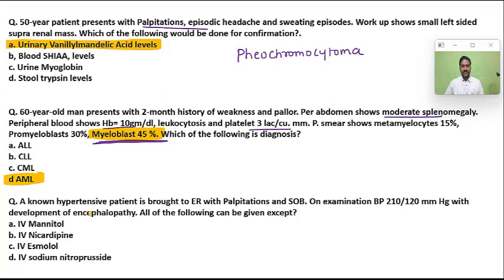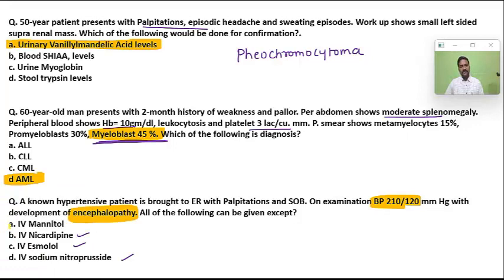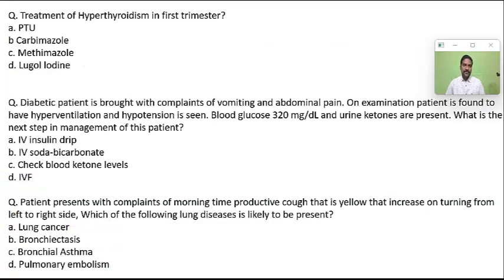A non-hypertensive patient is brought to the emergency with palpitations and shortness of breath. BP is very high and he has developed encephalopathy — this is a hypertensive emergency. In this situation, nitrates can be given and beta blockers can be given. IV mannitol cannot be given unless there is cerebral hemorrhage with edema; only then can IV mannitol help bring down cerebral edema.